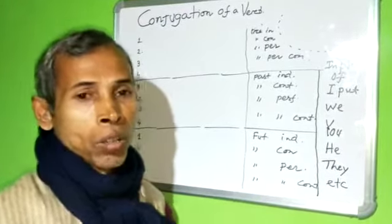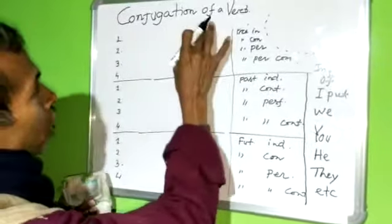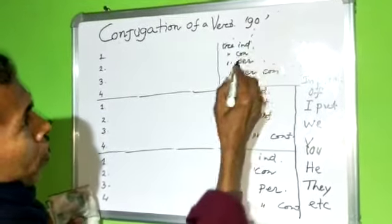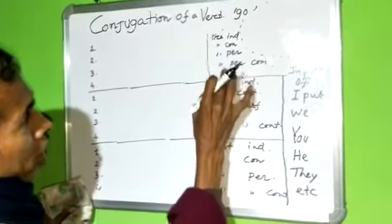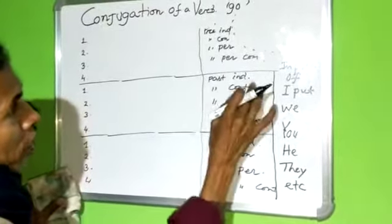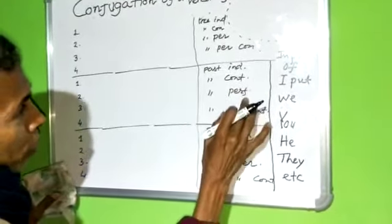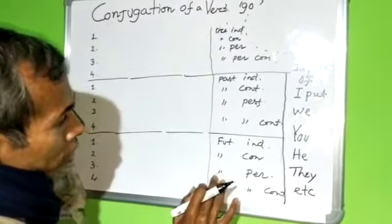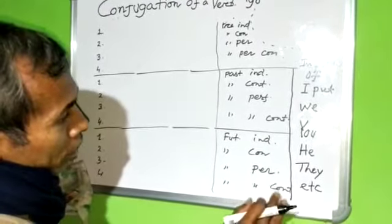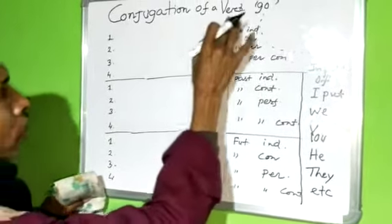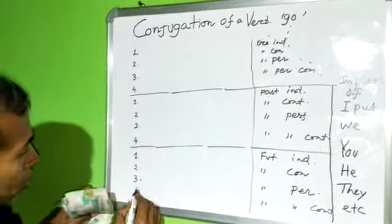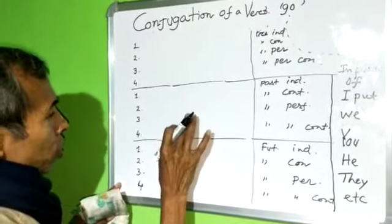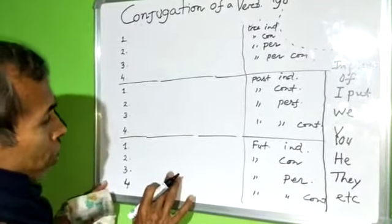Now, conjugation of the verb GO. Present indefinite, present continuous, present perfect, present perfect continuous, past indefinite, past continuous, past perfect, past perfect continuous, future indefinite, future continuous, future perfect, future perfect continuous. That gives us 12 sentences with present tense, 4 with past tense, and 4 with future tense — 12 sentences total.